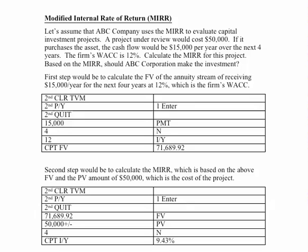Therefore, if we utilize the Internal Rate of Return, our stockholders and bondholders might not be too happy with us. So we incorporate the Modified Internal Rate of Return, whereby we will utilize the firm's weighted average cost of capital — that return placed upon us by our stockholders and bondholders in this so-called risk category — and that is the rate we will use to determine this Modified Rate of Return.